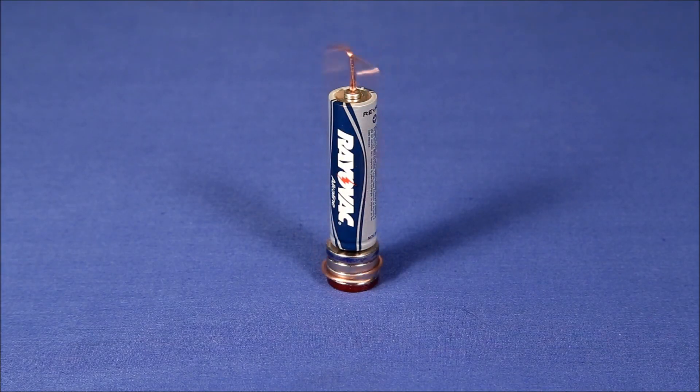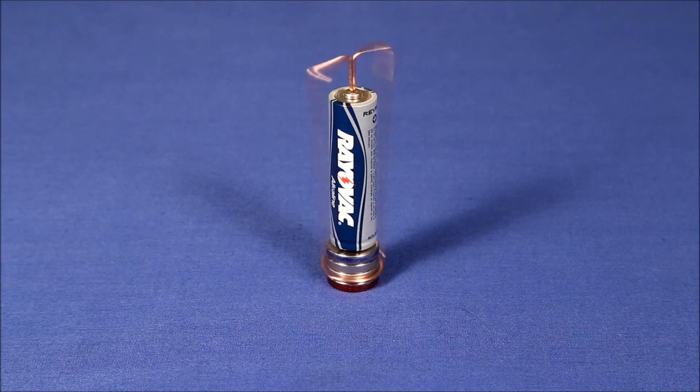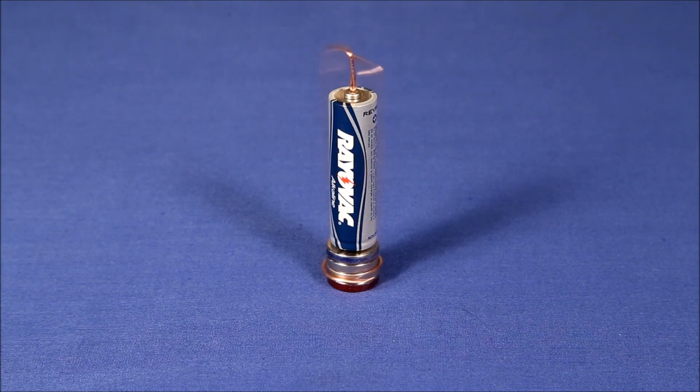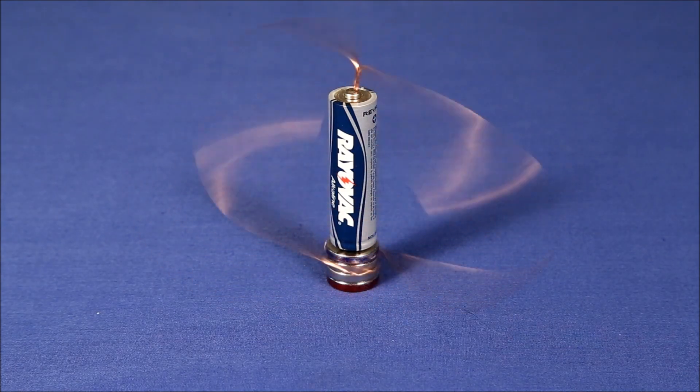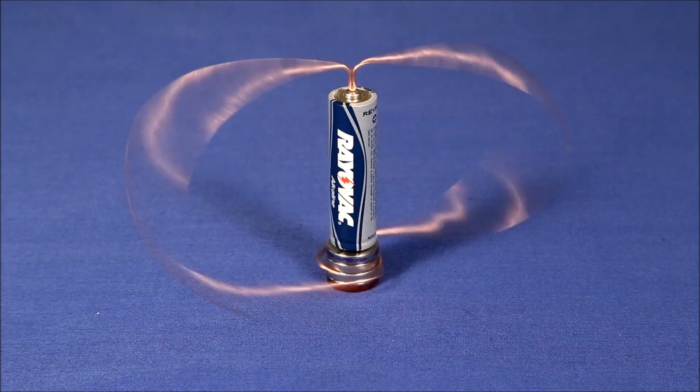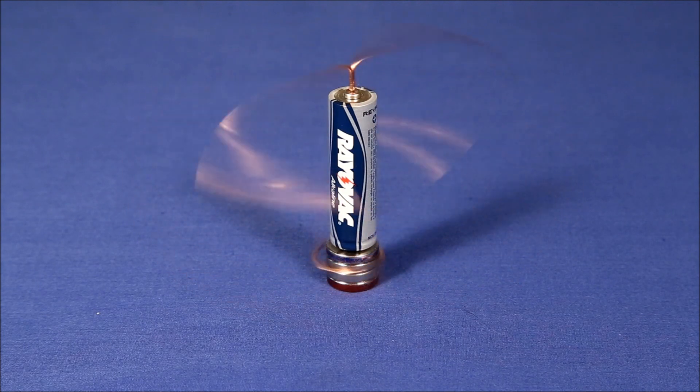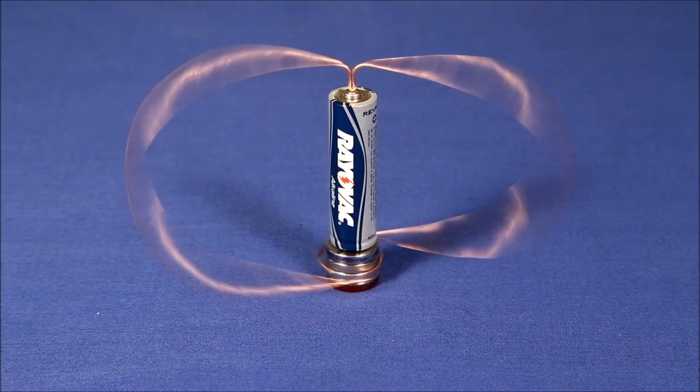The wire used to create the armature needs to be stiff enough so that it holds its shape as the RPMs build up. For compact designs like this, 18 gauge copper wire works well. Larger armatures like this one work better if you drop down to a 16 or even a 14 gauge, which is quite a bit thicker and more stable.